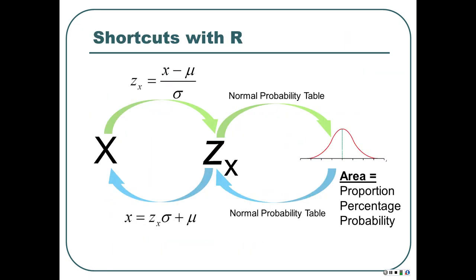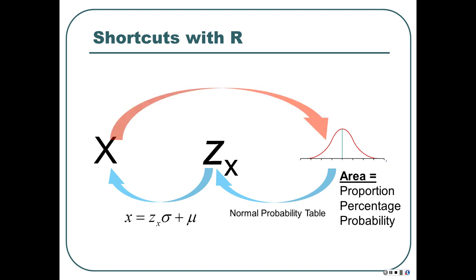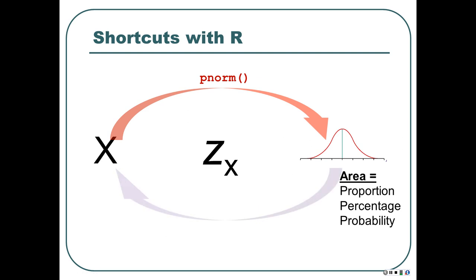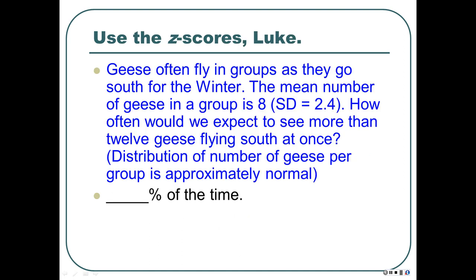What if you're lazy and don't want to use the table? Then we can take shortcuts with R. Unless I tell you otherwise, you never have to use the table if you can use R instead. You either need the table, R, or a fairly advanced understanding of calculus with the normal curve formula memorized. R is simpler. Instead of these two jumps — raw score to z-score to area — we can use one function in R: pnorm. If we know an area and want the raw score, there's another function: qnorm.